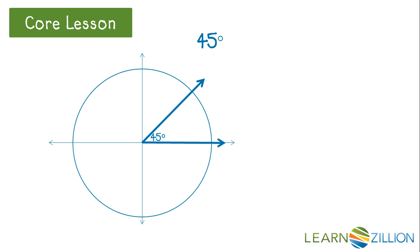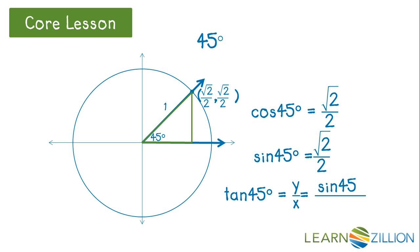For a 45 degree angle, we'll use our 45, 45, 90 triangle, and we see that the coordinates would be radical 2 over 2 for both the x and the y. So the cosine and the sine are both the square root of 2 over 2. The tangent is y over x, and since x and y are the same for 45 degrees, we have a number divided by itself, which is 1.